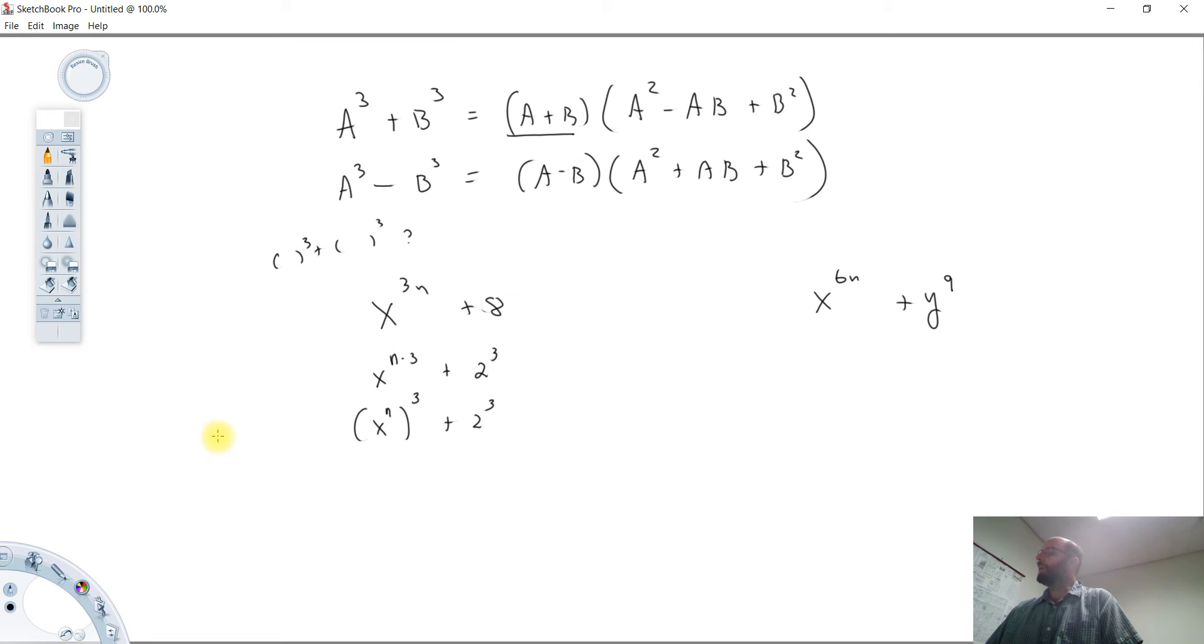So now what we have to do is realize, okay, when we look at this formula here, a is equal to x to the n, and b is equal to 2.